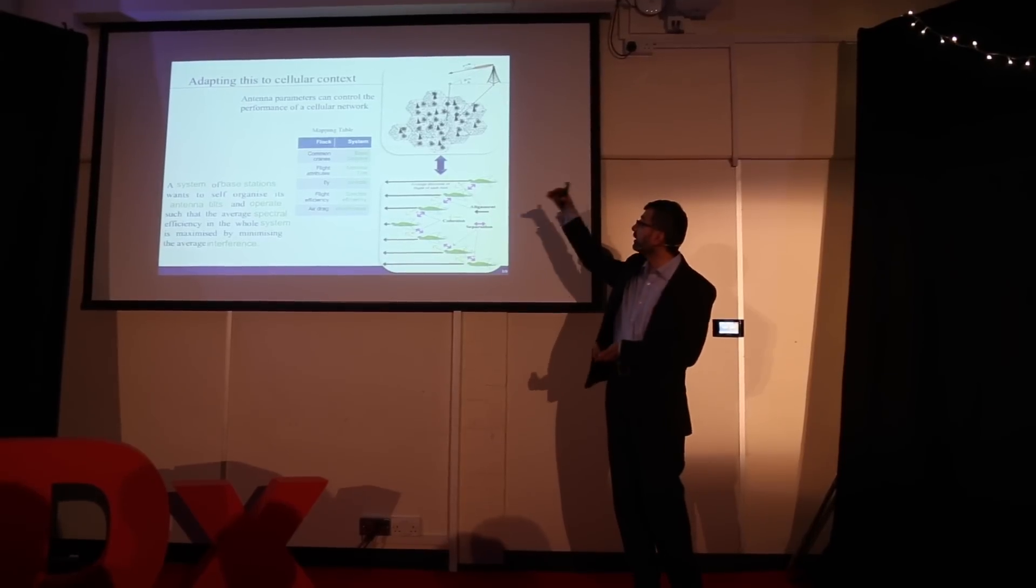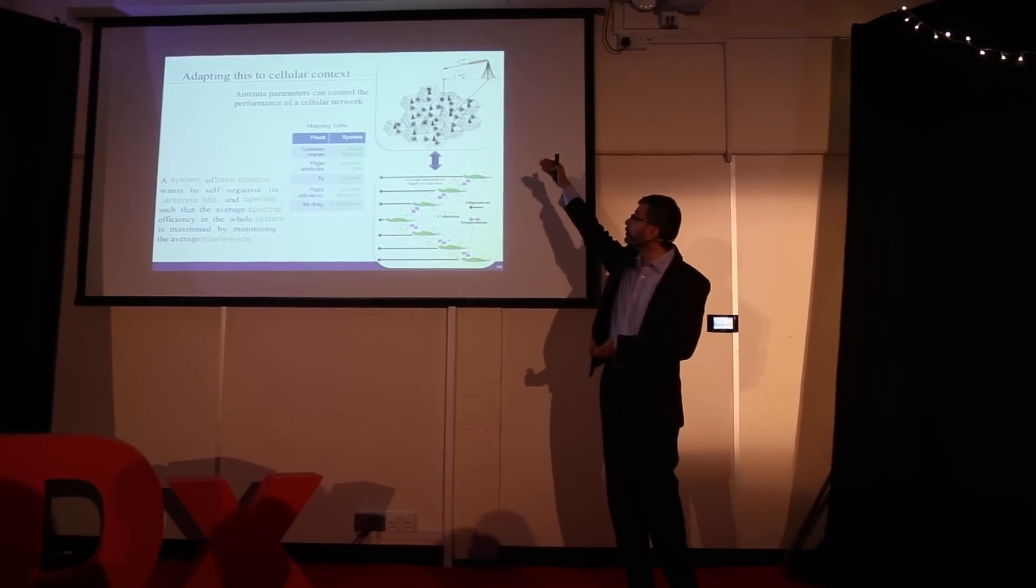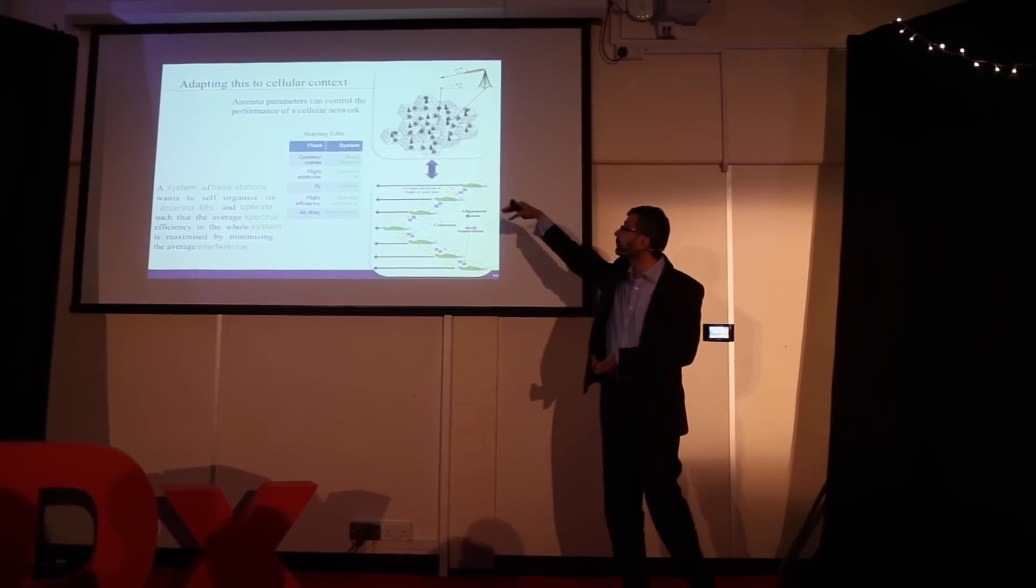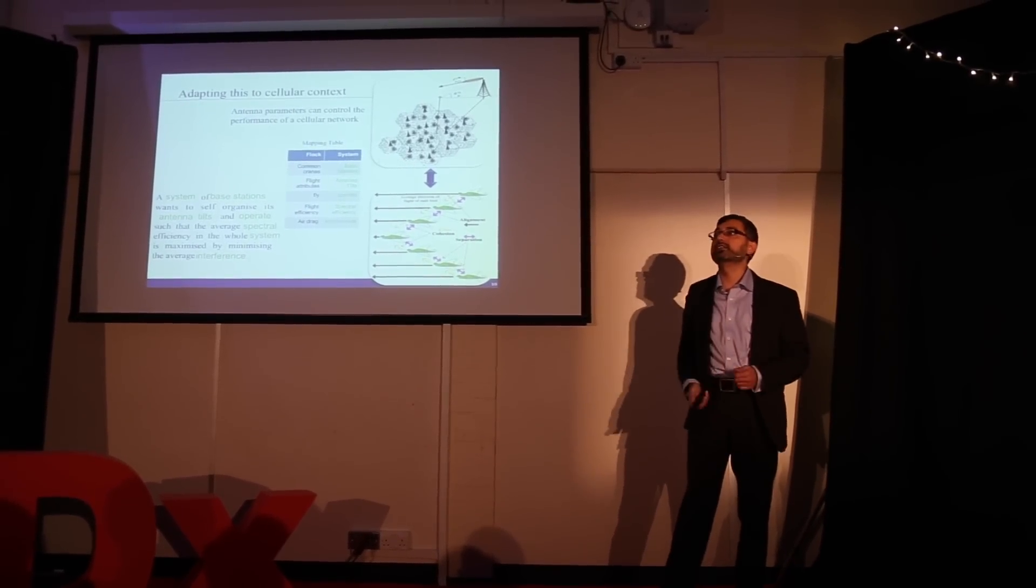So the problem of this flight of flock of cranes can be converted into a problem of a system of base stations that need to optimize itself using the antenna tilts in order to minimize the interference in the system. You can see that we can learn from a natural system, adopt it into an artificial system, a man-made system in order to create some intelligence.